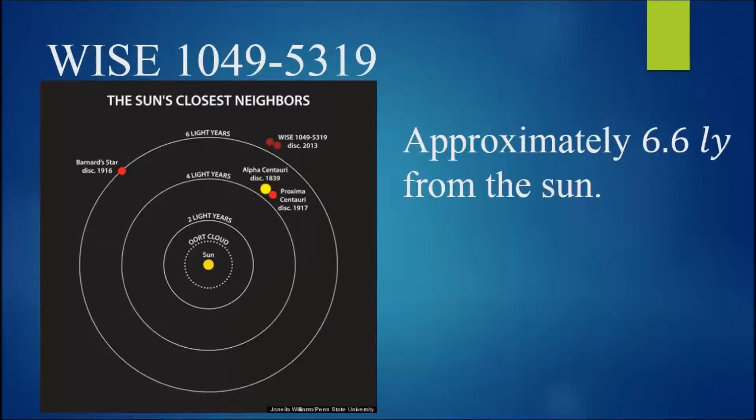Only last year, a new binary star system was discovered from images recorded by NASA's Wide Field Infrared Survey Explorer, WISE for short. This binary star system, known as WISE 1049-5319, consists of two brown dwarf stars. At a distance of about 6.6 light years away, it is the third closest star system to our sun discovered so far.